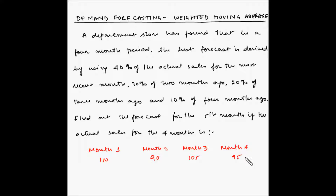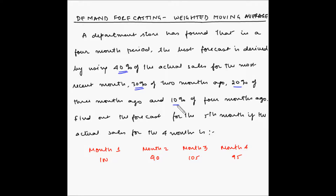We have to find out the forecasted sales for the fifth month using the weighted moving average method. The most recent month, which is the fourth month, will have 40 percent weightage; the third month will have 30 percent weightage; the second month will have 20 percent weightage; and the first month will have 10 percent weightage.